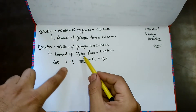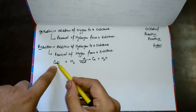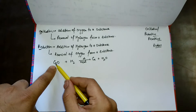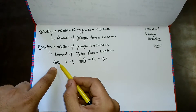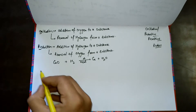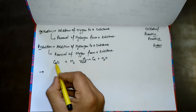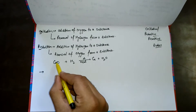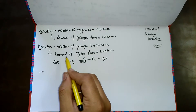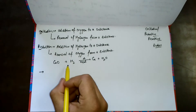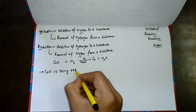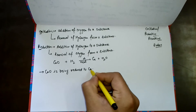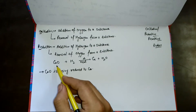By definition, the removal of oxygen from a substance — here the substance is copper oxide — is called reduction. So copper oxide is being reduced to copper. This is the first result from this reaction: removal of oxygen means reduction takes place, and copper oxide is reduced to copper.